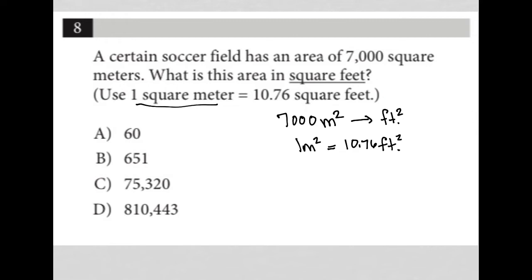So this is just unit conversion. Unit conversion, which means all we are going to do is take the original value, 7,000 meters squared. It's very important to include the unit. And we're going to multiply by a conversion factor, which we've been given, which is that one meter squared. And notice that I'm putting that on the bottom of this fraction, not the top.